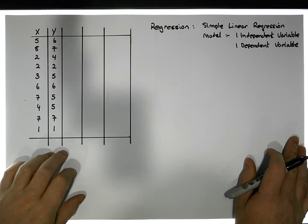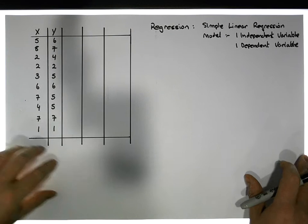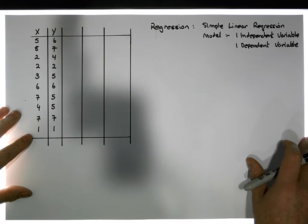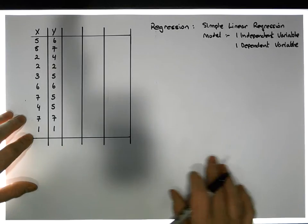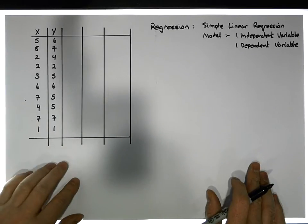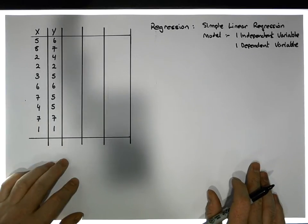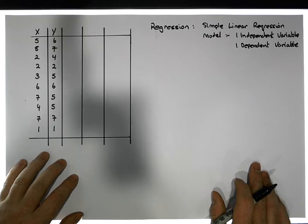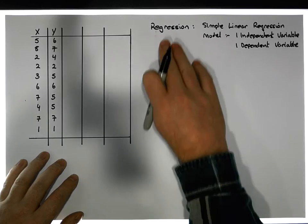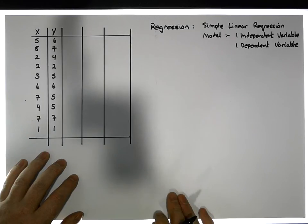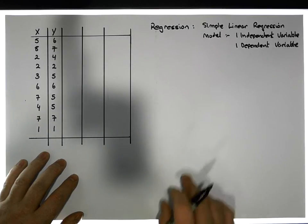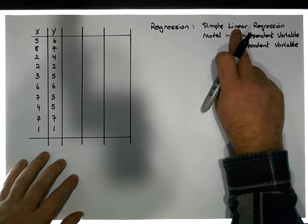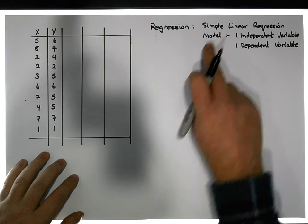Hi guys, this is Jonathan Lambert with the Mathematics Development and Support Service at the National College of Ireland. In this short video, another video in our series dealing with correlation and regression, and more importantly concentrating on regression, we are going to detail how to build a simple linear regression model.